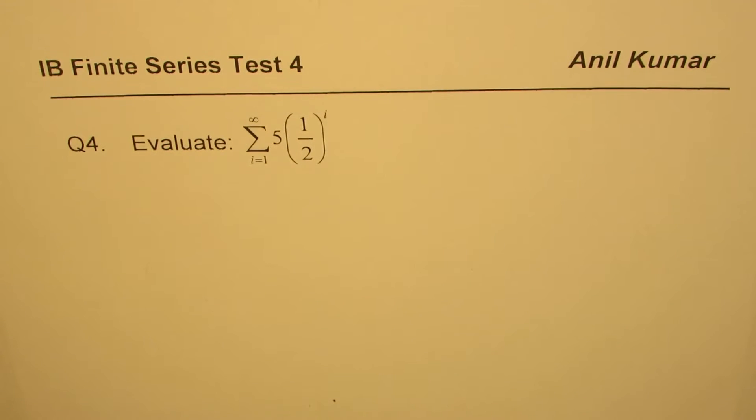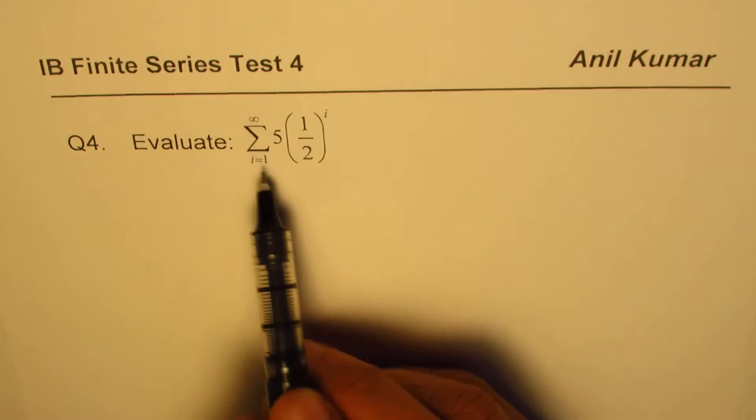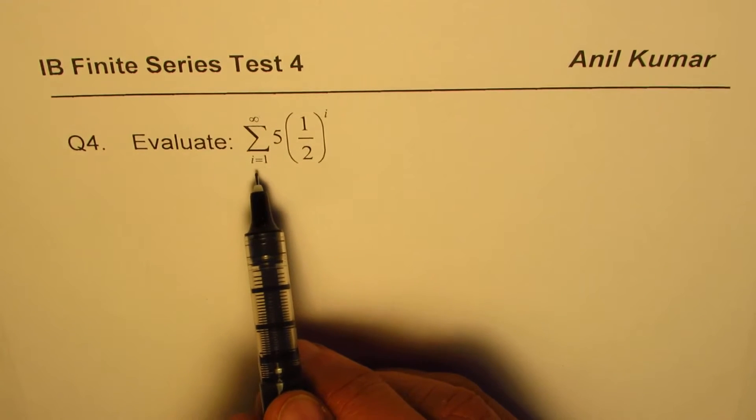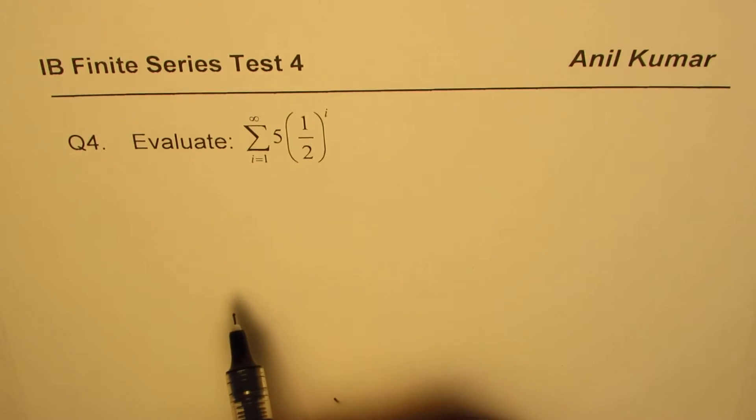I'm Anil Kumar. Here is question number four from the previous test paper on finite series. Evaluate the sum of the series in sigma notation. It is given as i from one to infinity, five times one-half to the power of i. You can pause the video, answer the question, and then look into my solution.